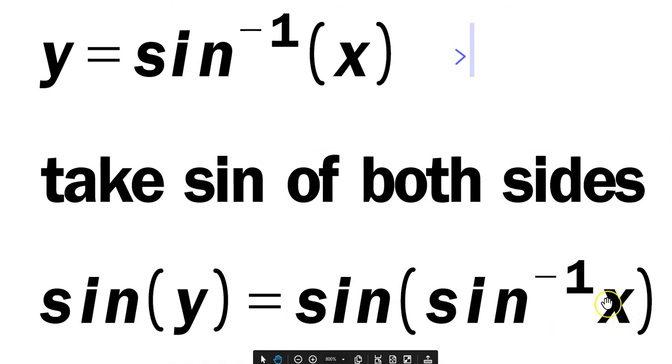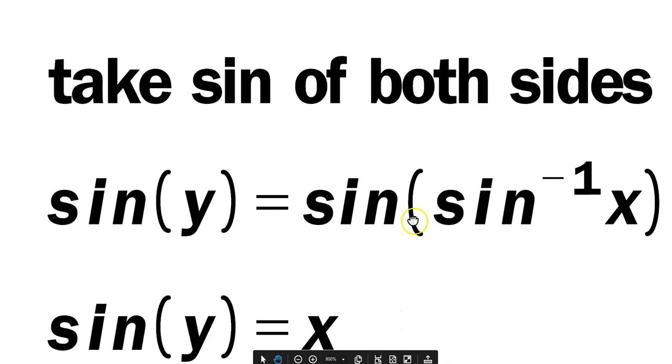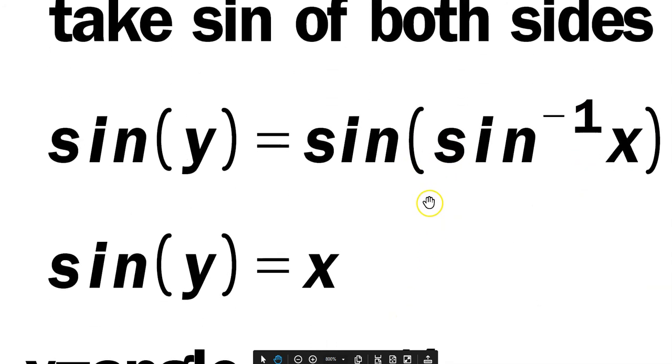Now perhaps here we recall from a class that the sine and the sine inverse are inverse functions. That means you can cancel them off. So you can say then that the sine of y is equal to x. Sine and sine inverse cross off.